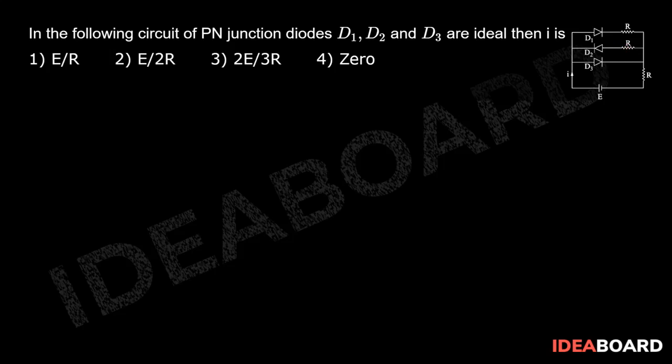If the current I is flowing from here, it will have two paths. One path will have diode D3 and resistance zero across this point and this point. Similarly, the second path will have diode D1 and a resistance R.